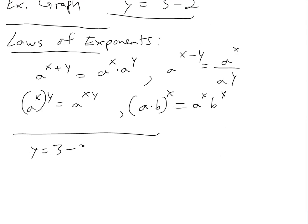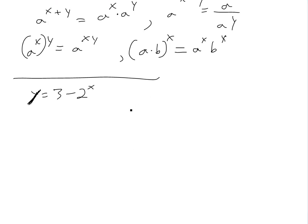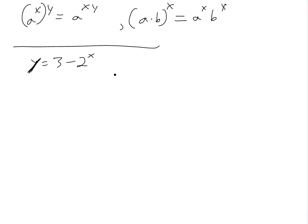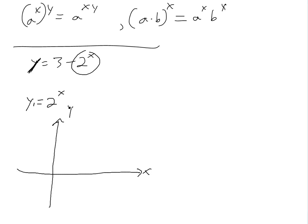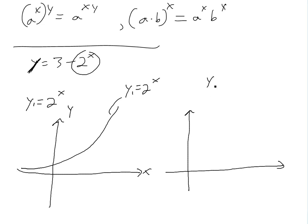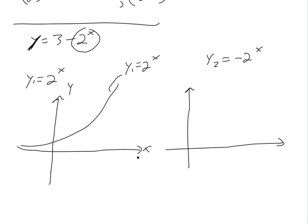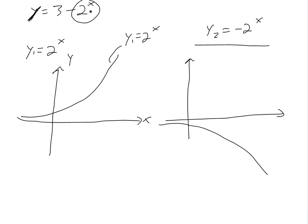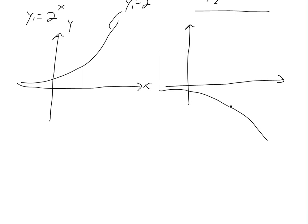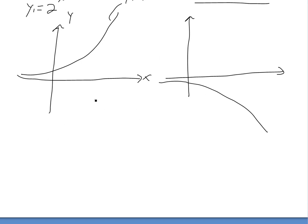Let's graph y equals 3 minus 2 to the x. To do this, let's break it up piece by piece. First, graph y1 equals 2 to the x — this is just the standard increasing exponential we had before. Now look at y2 equals negative 2 to the x — this is just the negative of that, so it's the mirror image flipped down, going downward.